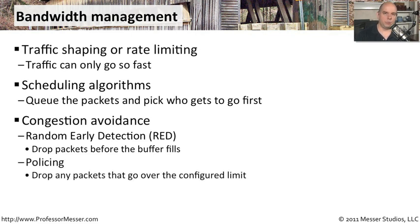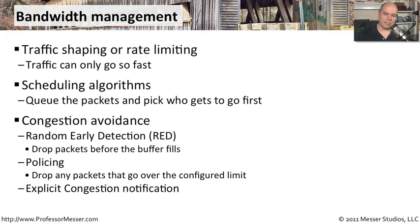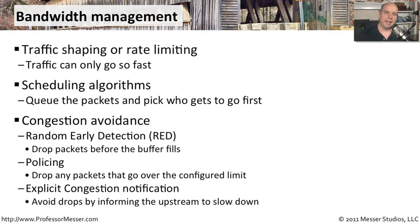Another type of congestion avoidance is called policing. In this case, there's no randomness — you draw a line in the sand and say if anything goes above this particular value, simply drop those packets. That way you can be assured that bandwidth will be reserved for other things that need to cross the network. One that's a little more intelligent is called Explicit Congestion Notification. In this case, devices communicate with each other, sending a message upstream saying they're receiving a lot of data and requesting a slowdown to avoid congestion. Both devices have to recognize this mechanism, but if in place, it can help avoid having to drop packets later on.